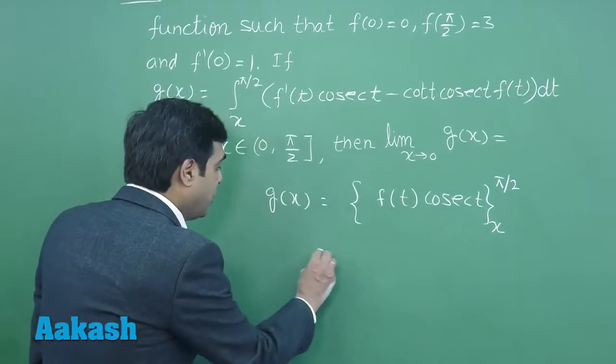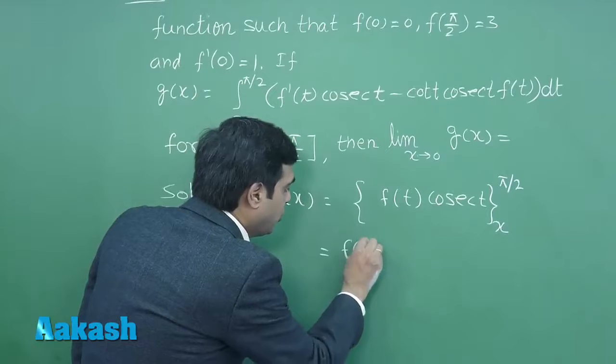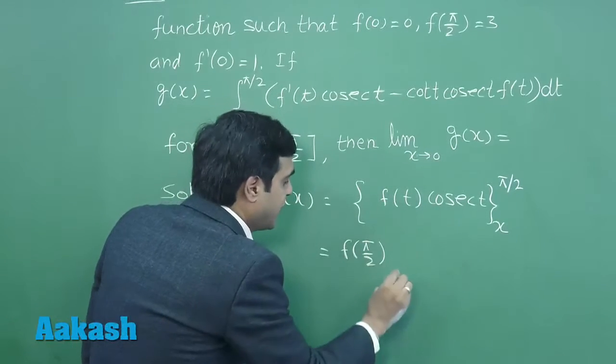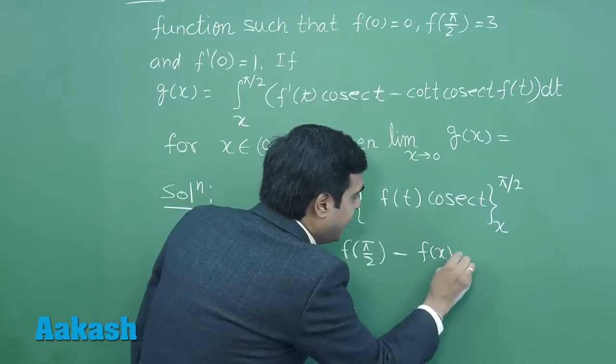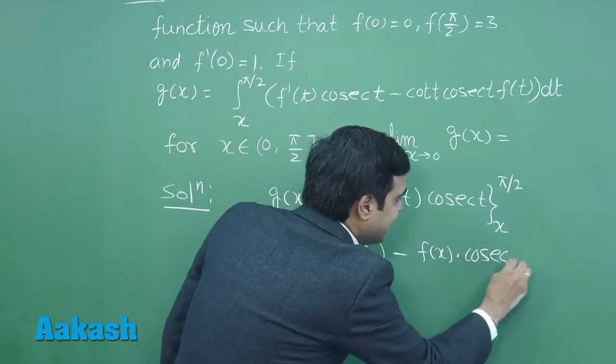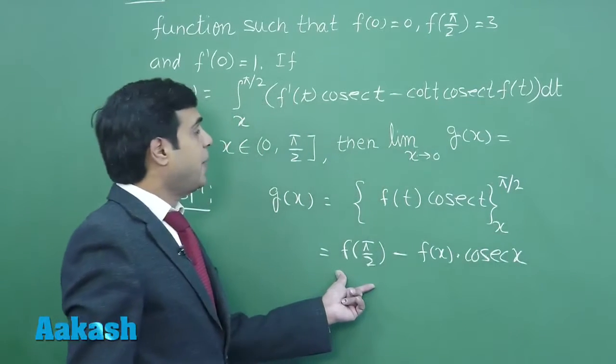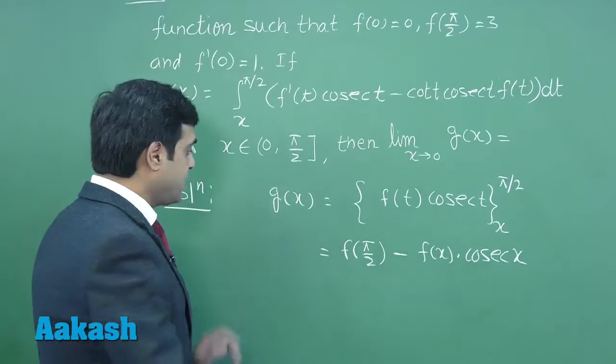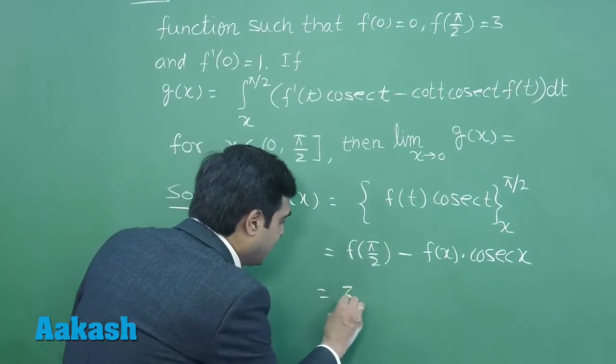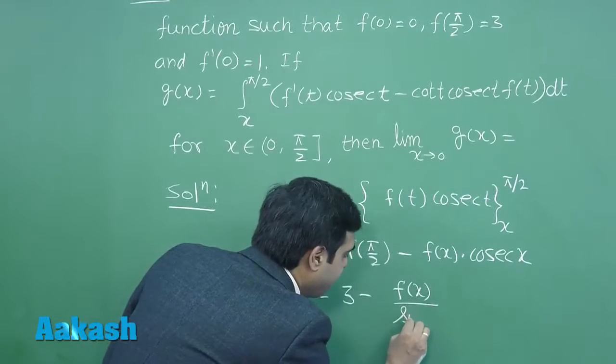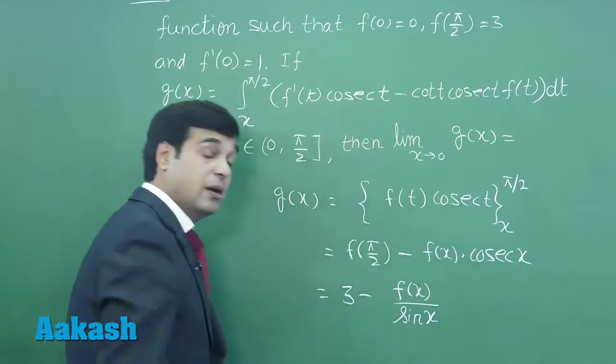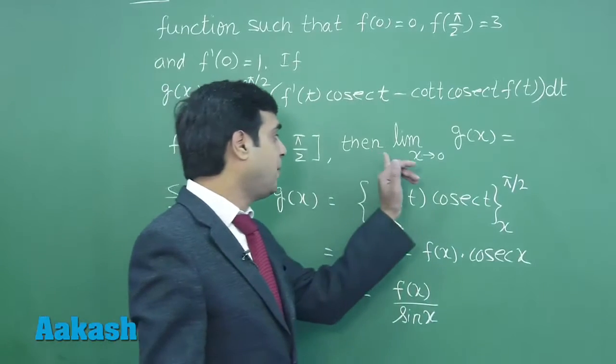Now substituting the value, we get f(π/2)·cosec(π/2), that is 1, minus f(x)·cosec(x). f(π/2) ki value given hai 3. Substituting this value we get 3 - f(x)cosec(x) or f(x)/sin(x). We can read because we have to find the limiting value.